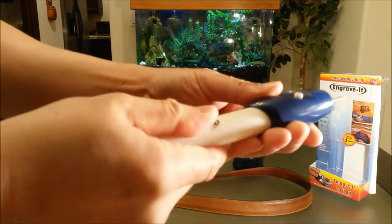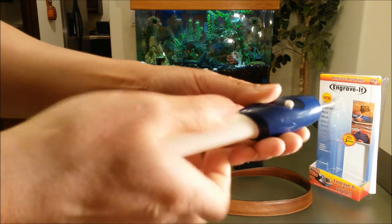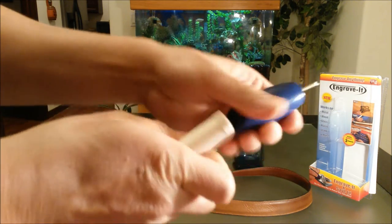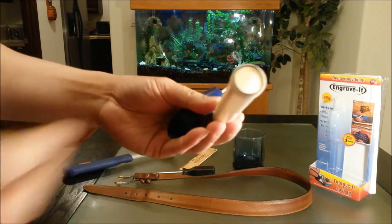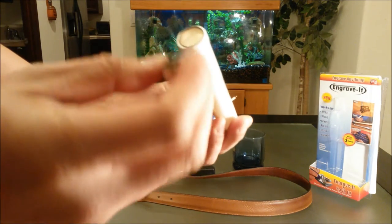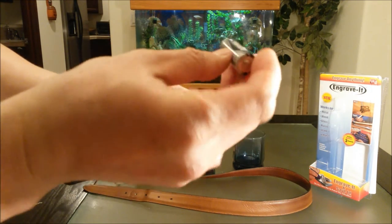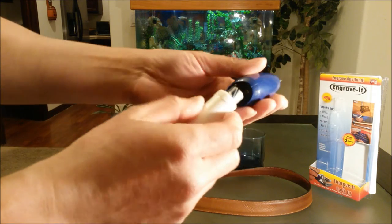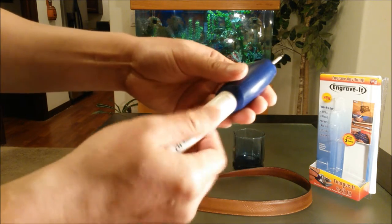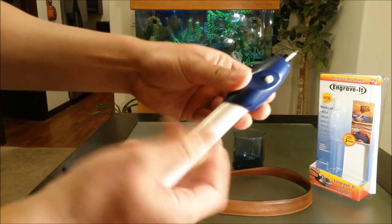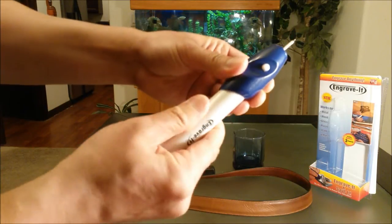What you want to do is unscrew it counterclockwise, and it will reveal the battery compartment holder. So I have two double A Rayovac batteries. Let's put this to good use.